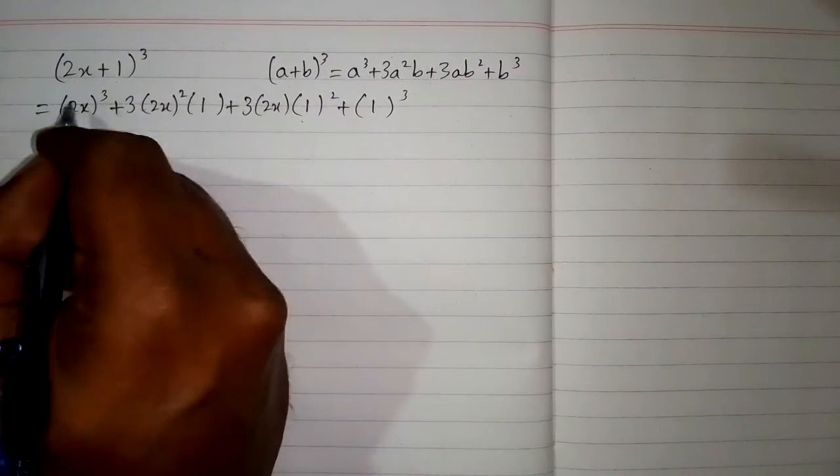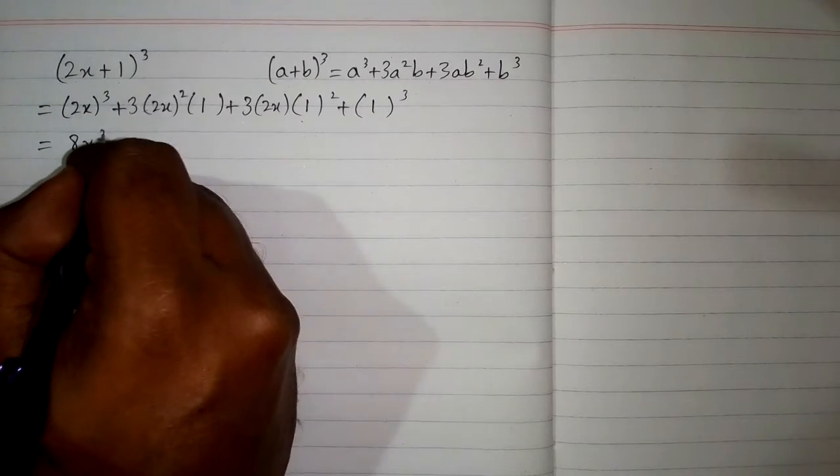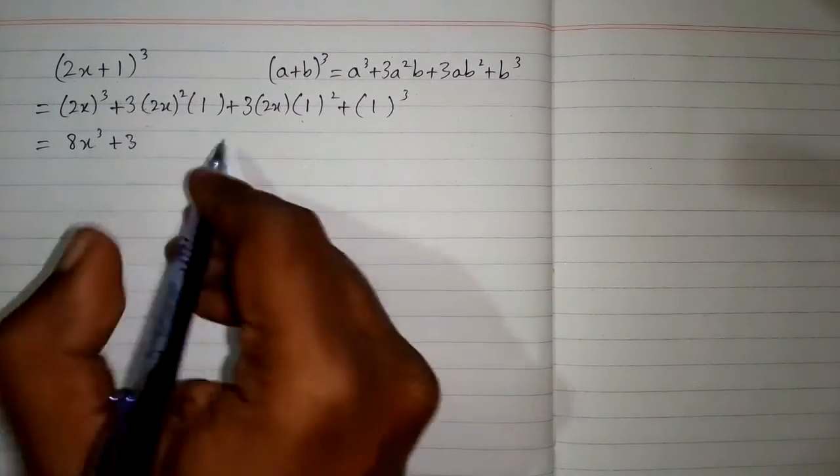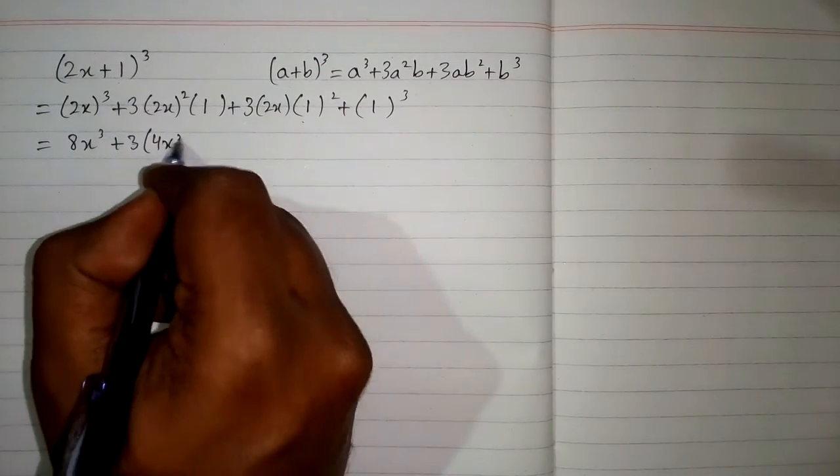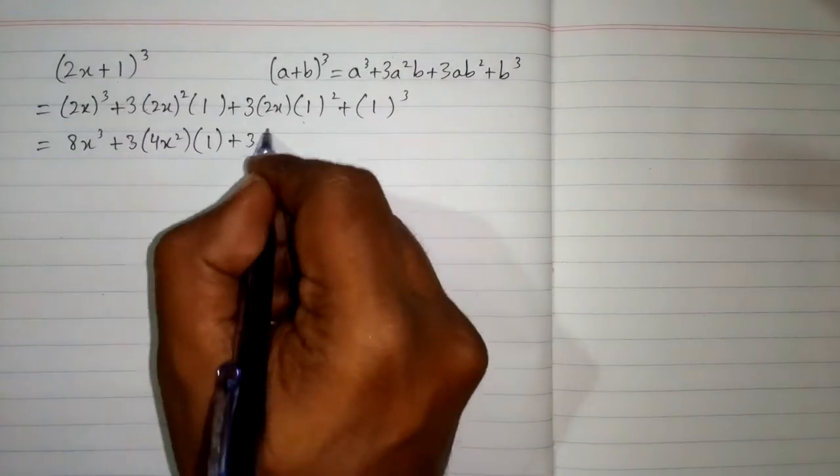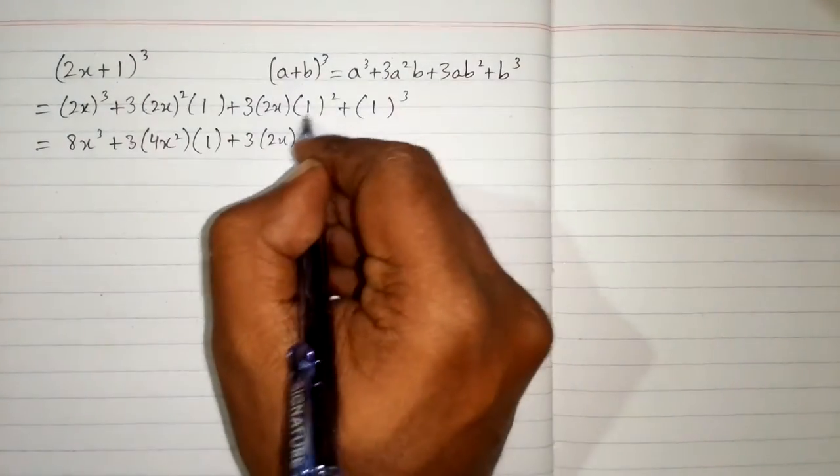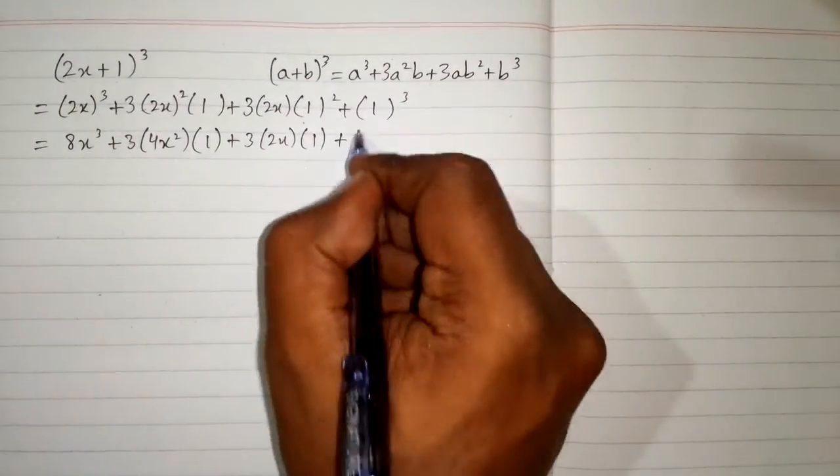Now cube of 2 is 8 and cube of x is x cube. Then plus square of 2 is 4 and square of x is x square. Then 2x and square of 1 is 1 plus cube of 1 is 1.